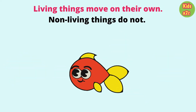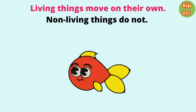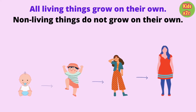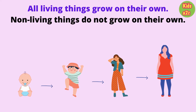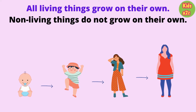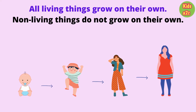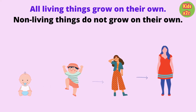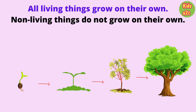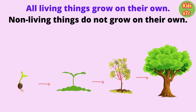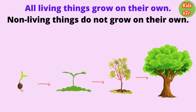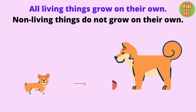All living things grow on their own. Non-living things do not grow on their own. A human child grows into an adult. Plants, whether they are big or small, grow from a tiny seed.